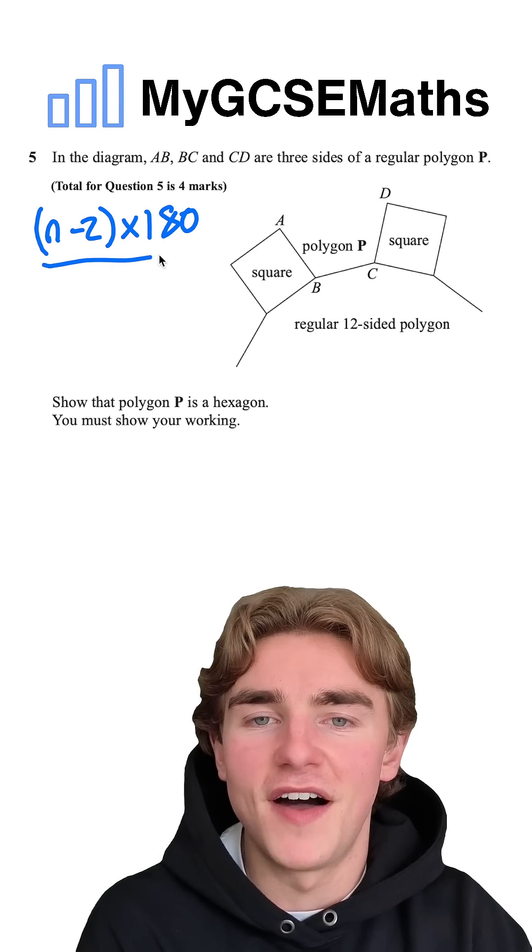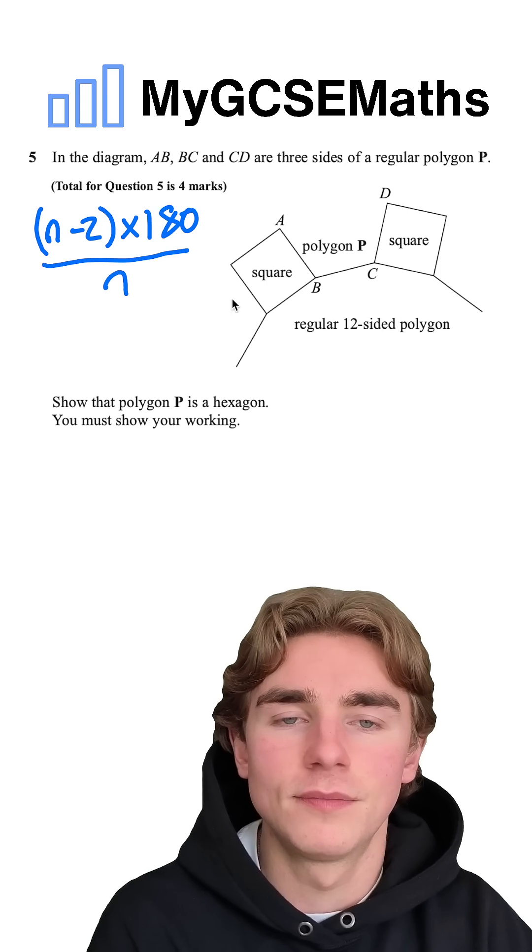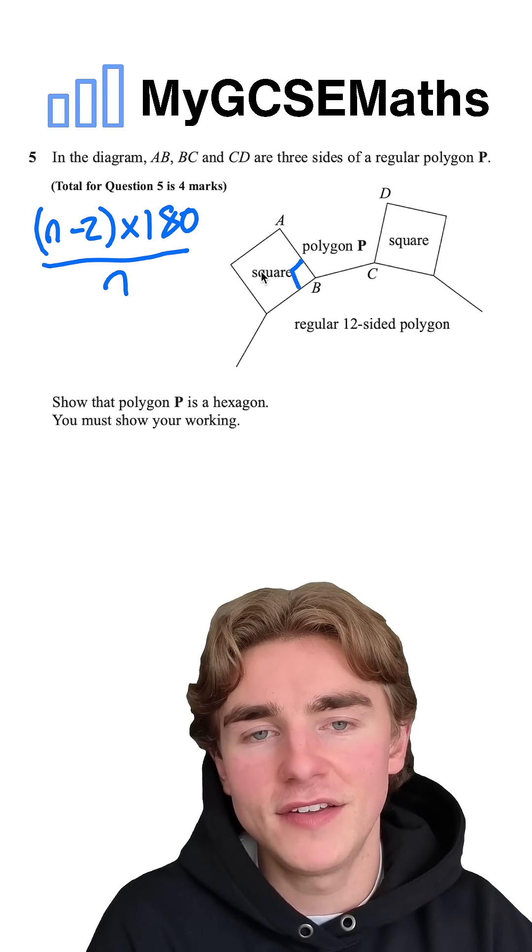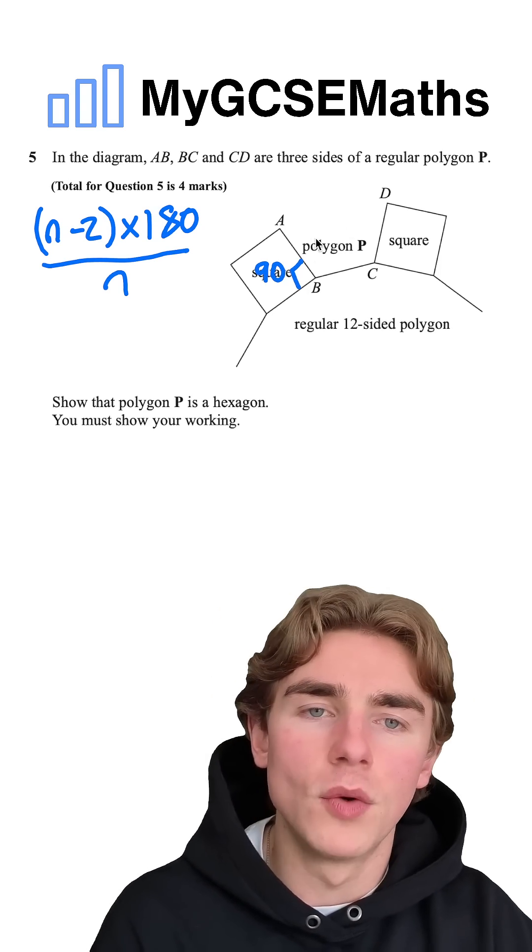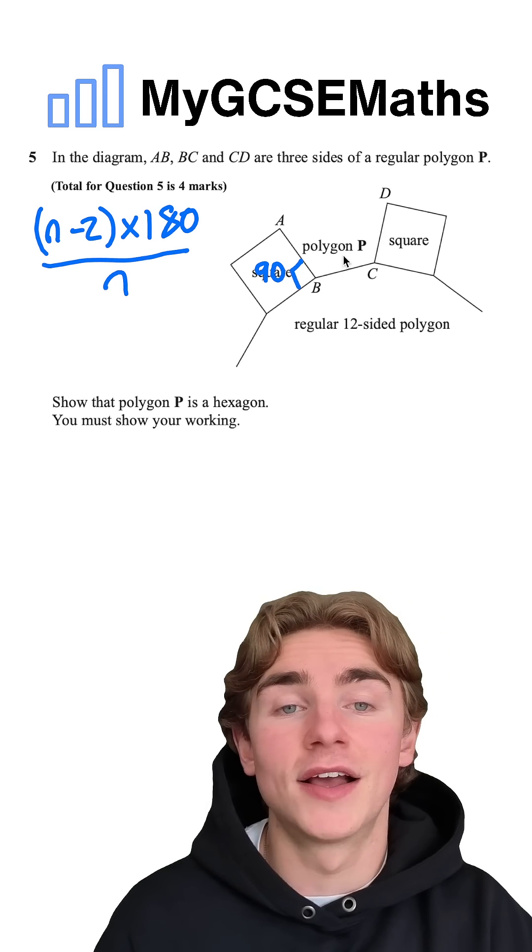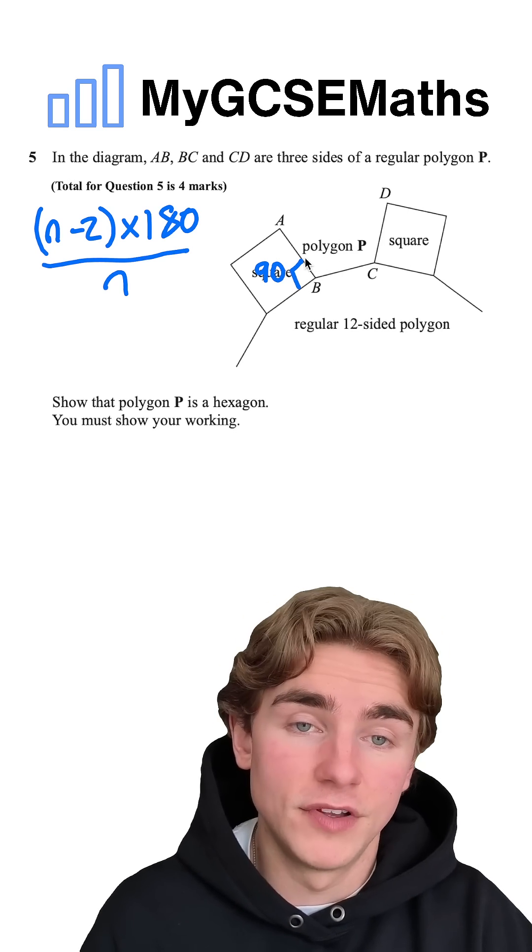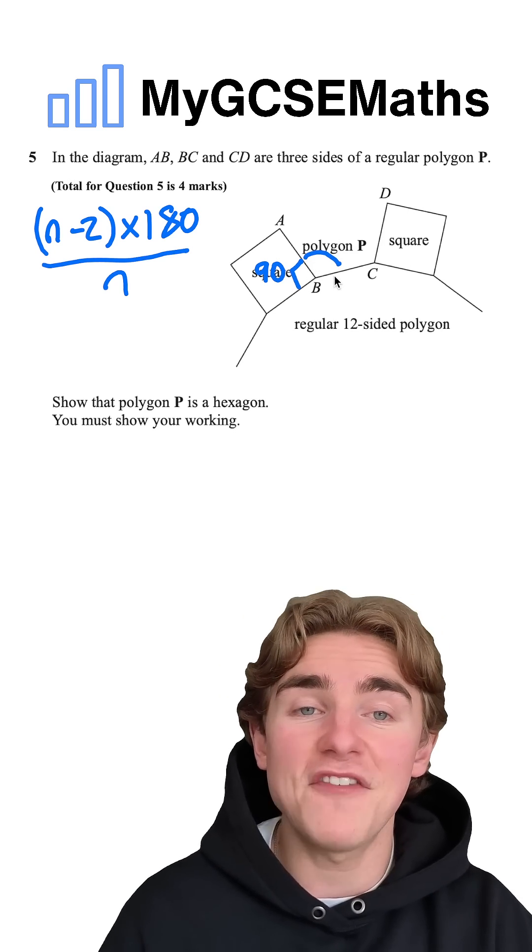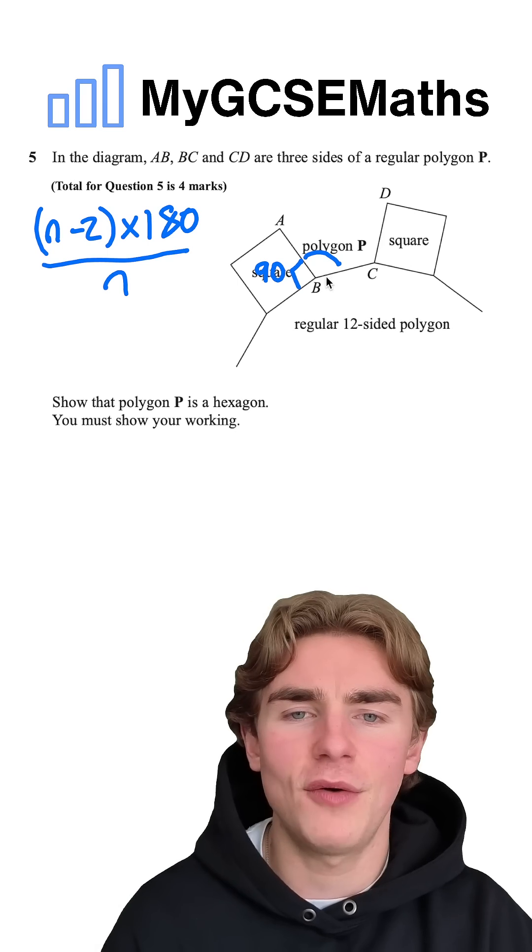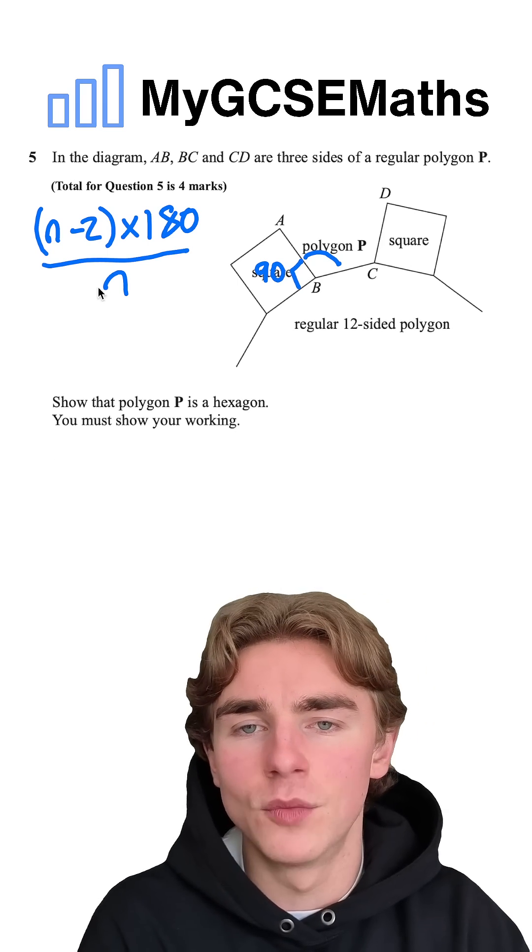We know that the square has an interior angle of 90 degrees. We can work out what the interior angle of polygon P must be, or it should be this angle here if it is in fact a hexagon.